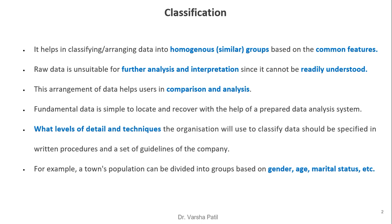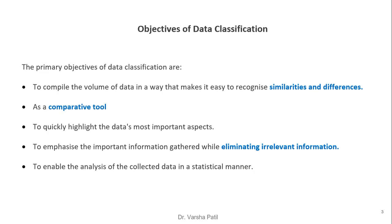For example, a town's population can be divided based on group type, such as gender, age, or marital status. Objectives of data classification: to compile the volume of data in a way that makes it easy to reconcile similarities and differences; as a comparative tool to quickly highlight the data's most important aspects; to emphasize the important information gathered while eliminating irrelevant information; and to enable the analysis of the collected data in a statistical manner.